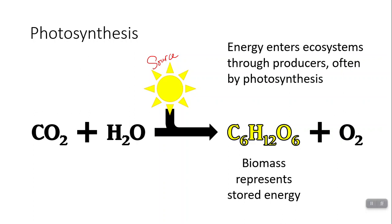The glucose that's produced is a form of biomass. Biomass is all the biological molecules in an organism — basically what you would get if you took an organism and sucked out all the water; the stuff left would be the biomass, representing stored energy. Energy enters ecosystems always through producers, and most commonly through photosynthesis, though some ecosystems are light-independent and rely on chemosynthesis. But for the most part, it's solar energy powering an entire ecosystem.